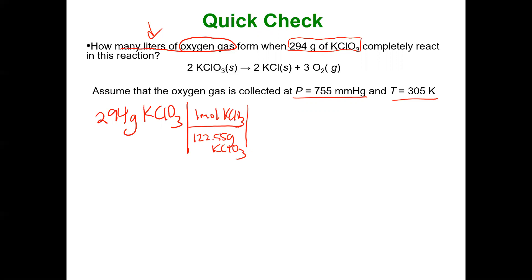And here's the beauty of stoichiometry in that mole ratio. We know that two moles of potassium chlorate will give us three moles of O2. And once we have our moles of O2 we can use our moles of O2 and plug that into PV equals nRT.